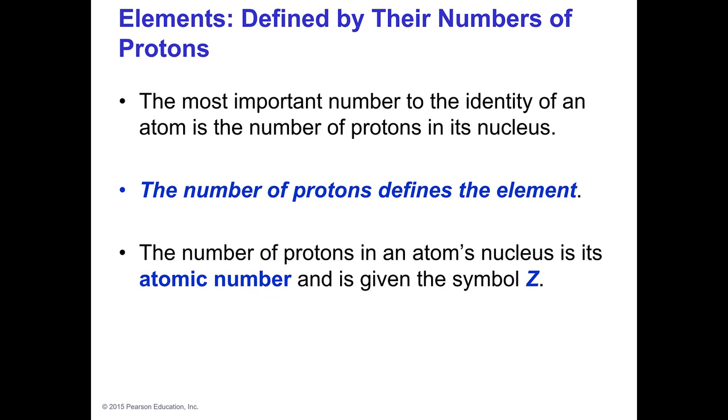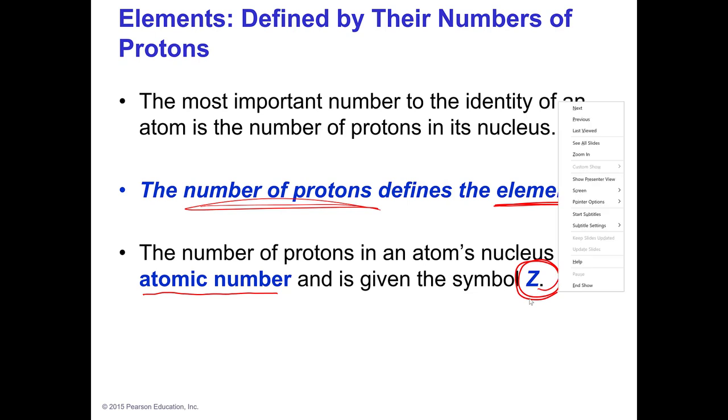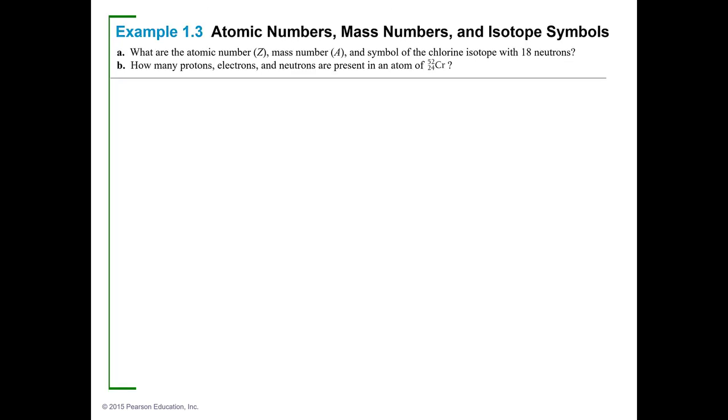The most important number when we identify an atom is the number of protons in its nucleus. That is by definition the element - the number of protons defines what element it is. The number of protons in an atom's nucleus is its atomic number, and we use the symbol Z. The atomic number is Z, and so I tell you that so that when we look at this little problem here we'll know what that means. So I'm going to show you something that we're going to do in the next part. When you look at your periodic table, you should have a copy of it there.